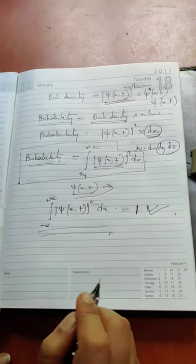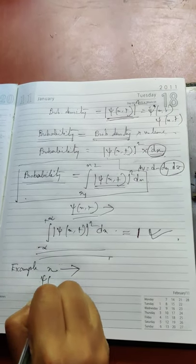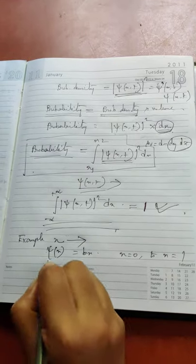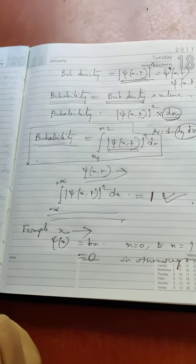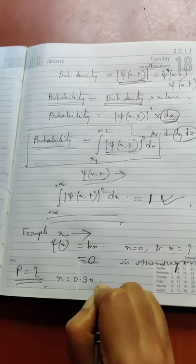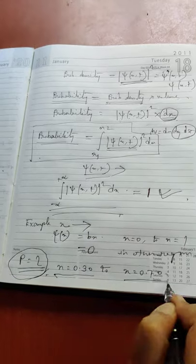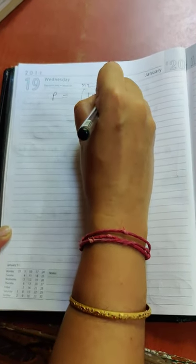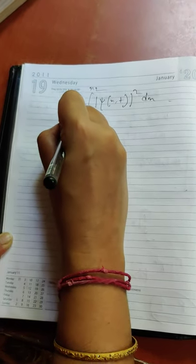Consider an example: one particle is moving along the positive x direction, and the wave function of the particle is psi equal to bx. It exists in the region between x equal to 0 and x equal to 1, and psi equals 0 in all other regions. We have to find out the probability of finding the particle between x equal to 0.30 and x equal to 0.70. The value of x1 is 0.3 and x2 is 0.7.